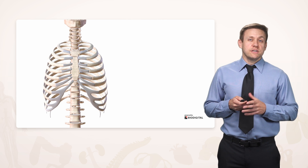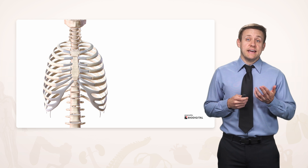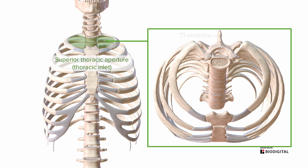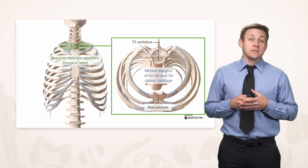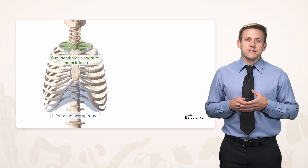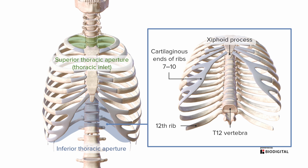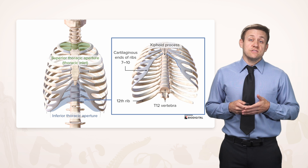The ribcage is very strong and protective, but structures still need to pass between the neck and the thorax. They do so through an opening called the superior thoracic aperture or thoracic inlet, bordered by the T1 vertebra, the edges of the first ribs, and the manubrium. Similarly, there's an opening at the bottom called the inferior thoracic aperture, bordered by the T12 vertebra, the 12th rib, the cartilaginous ends of ribs 7 to 10, and the xiphoid process anteriorly. Because these cartilages form a prominent inferior border, we often refer to this as the costal margin.